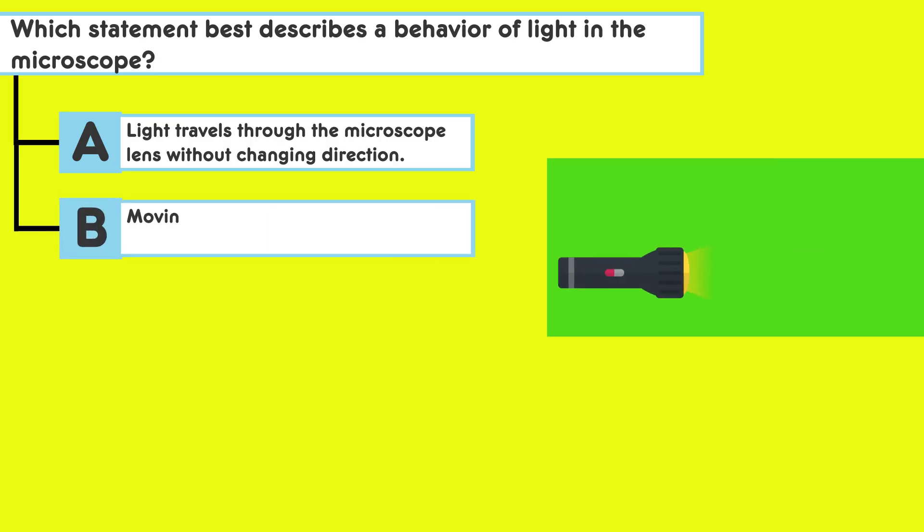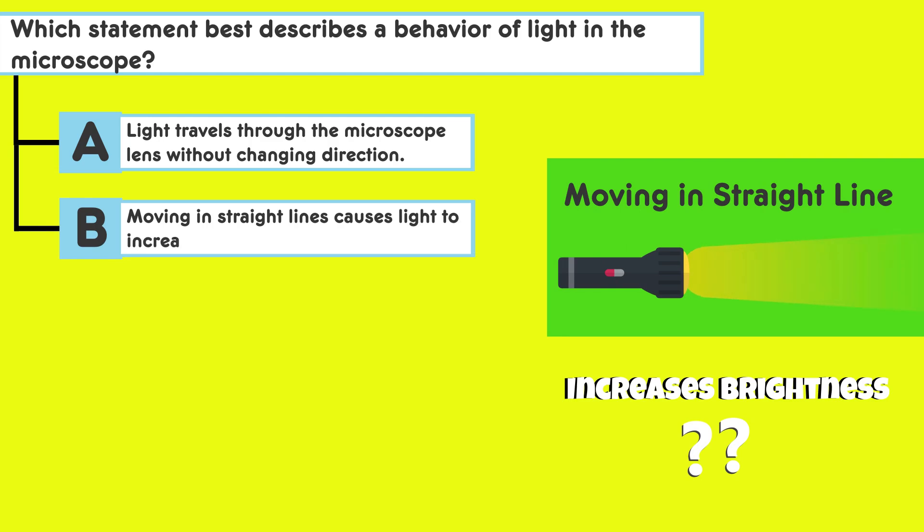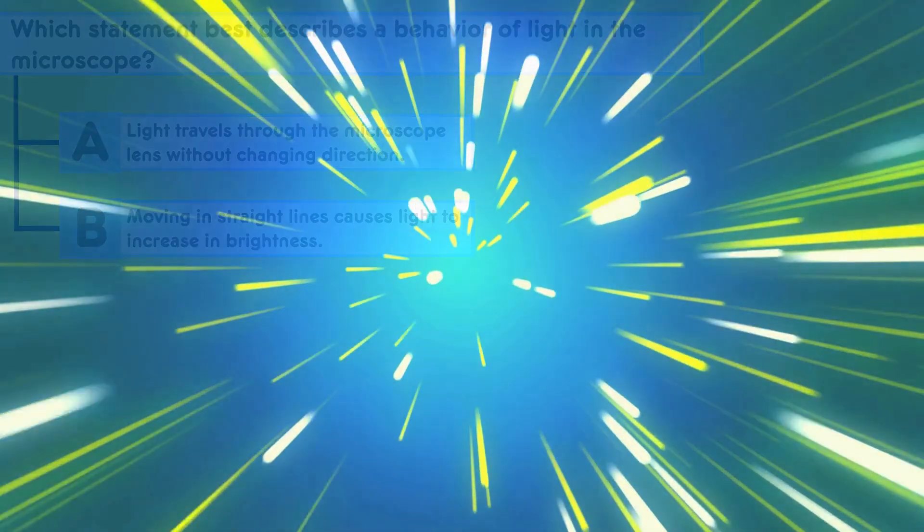Answer choice B: Moving in straight lines causes light to increase in brightness. Here's a quick tip. Think about whether the path of light affects its brightness. Does moving in straight lines change how bright the light appears?